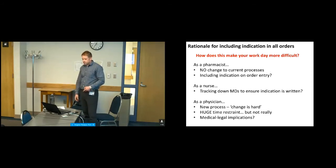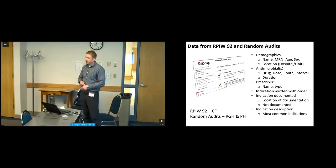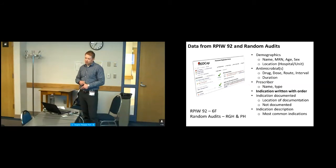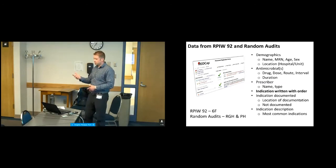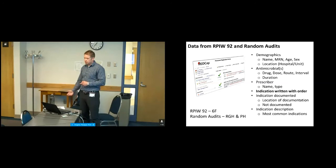Next we'll quickly go through some data from RPIW 92 and our random audits. On the right you can see the information we're collecting with these data tools: basic demographic information, patient unit, and for antimicrobials it'll capture the specific drug, dose, route, interval, duration, and specific prescribers — so we can attach different orders to different prescribers. It also captures whether the indication was written with the order, and if not, whether the indication is documented somewhere in the chart or not documented at all. It also captures the indication description, looking at our common indications.